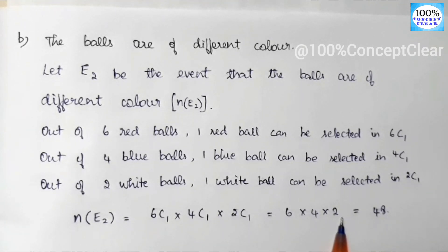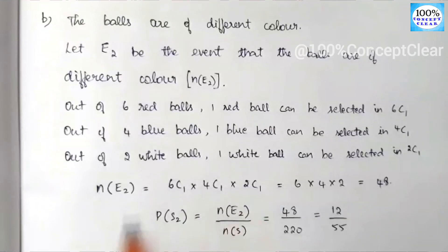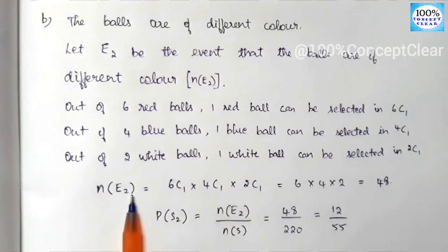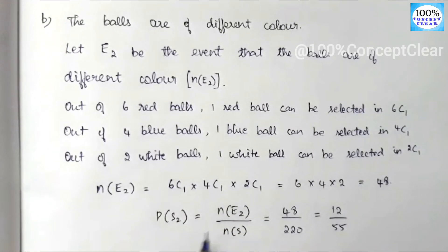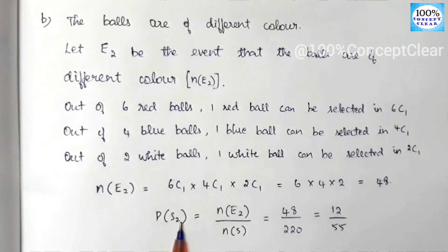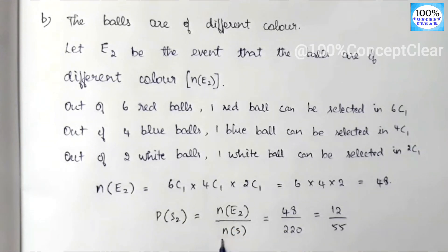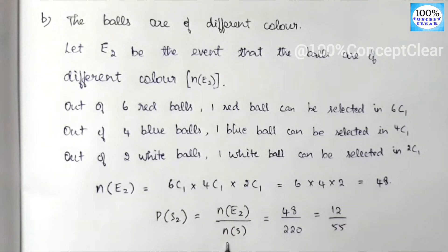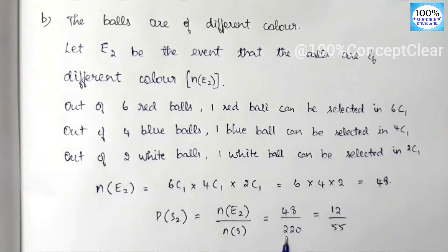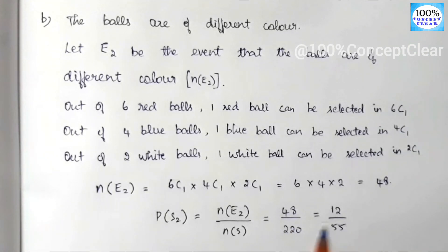Multiplying, n(E2) = 48. The second probability P(E2) = n(E2) divided by n(S) = 48 divided by 220. Reducing, the answer is 12 by 55.